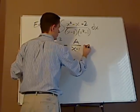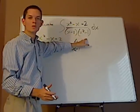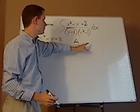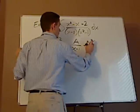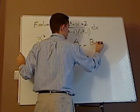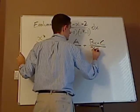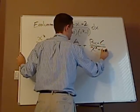A over x minus 1 plus, since this is x squared, what you want to do is you want to put the numerator one less degree. So it would be bx plus c over x squared plus 1.